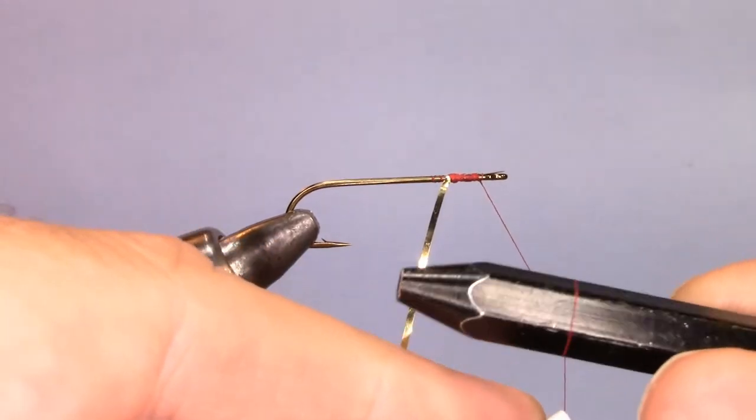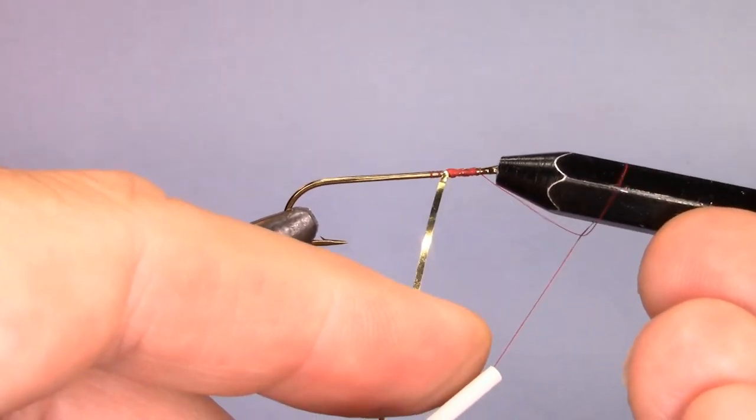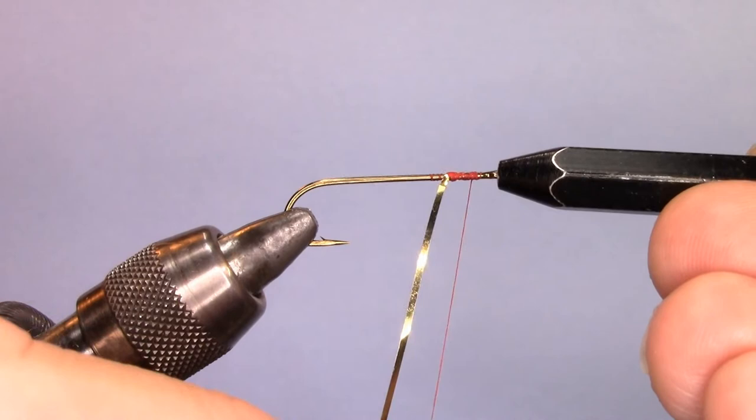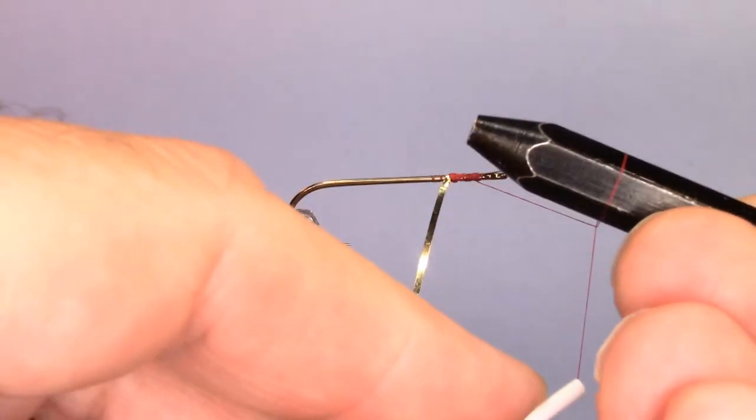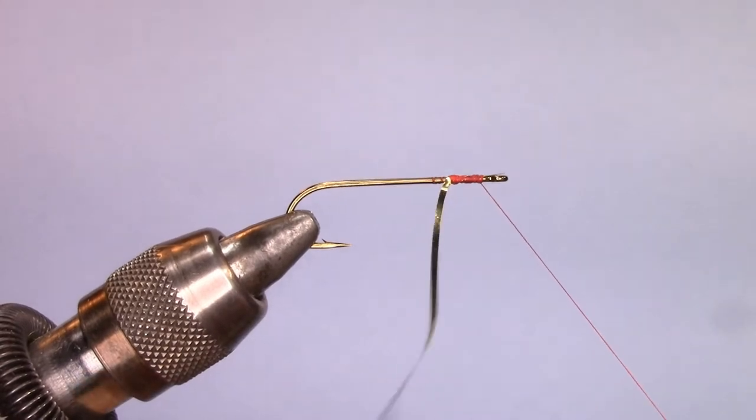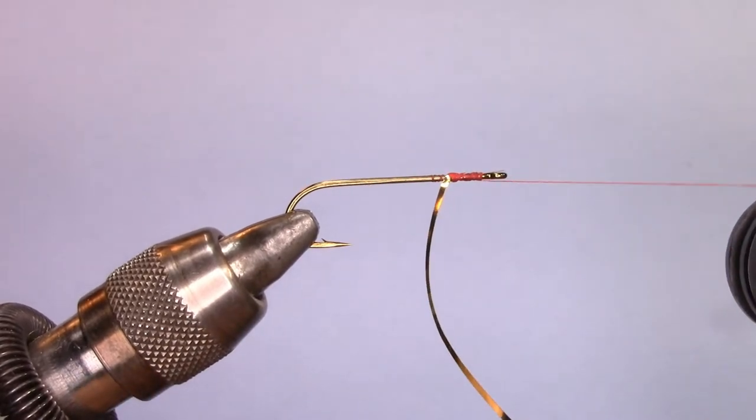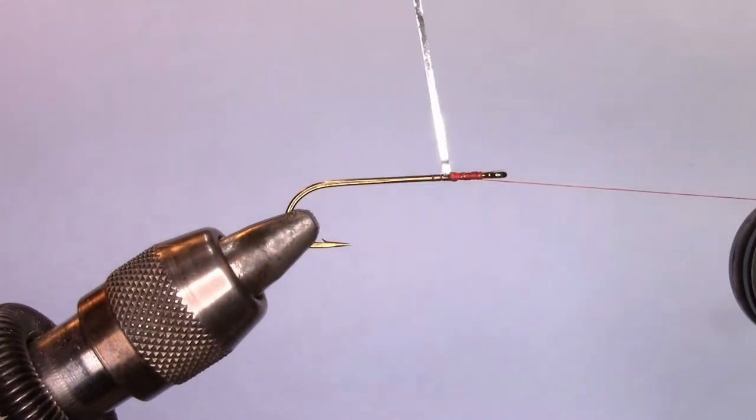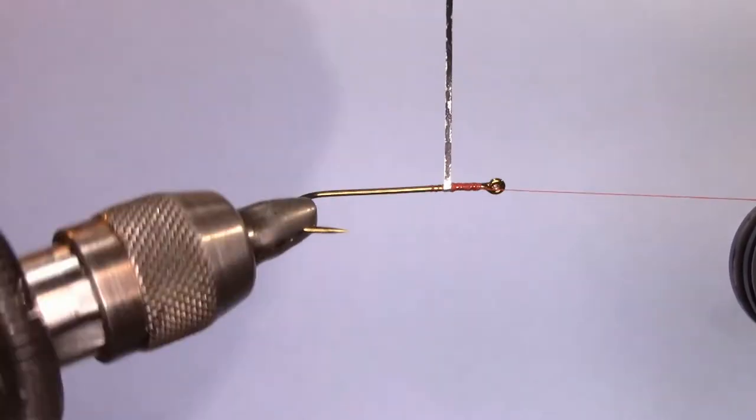The half hitch knot is an essential knot for rotary vices. Once you put a half hitch knot in, you will place your thread into the bobbin cradle and now you can start wrapping whatever material using the rotary function and your thread will not unravel.